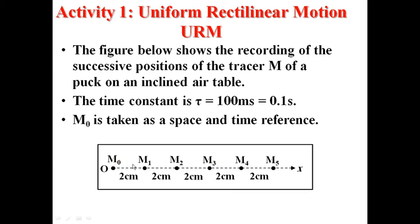The figure below shows the recording of an object. The time constant is 0.1 second. The time constant is the time separating two consecutive dots. The object needs 0.1 second to go from M0 to M1, 0.1 second to go from M2 to M3, and so on. M0 is taken as space and time reference. The position of M0 is 0, and the time of M0 is 0.